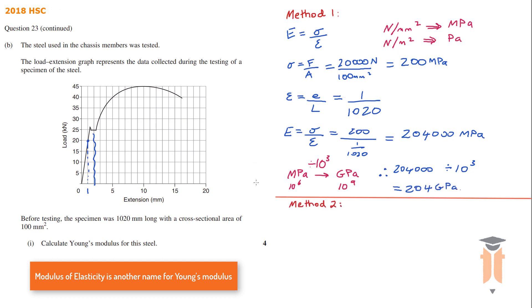Now our second method is a much easier and shorter method where we can just employ this equation. E is equal to FLe/A. The big E is Young's modulus. The F is the force. L is the original length. e is the extension. And A is the cross-sectional area.